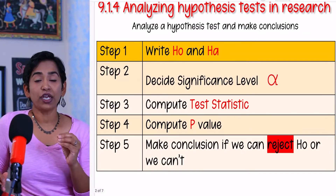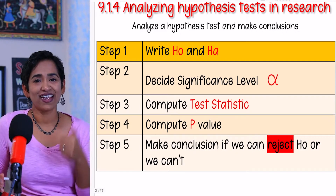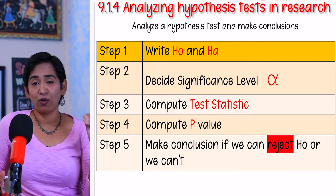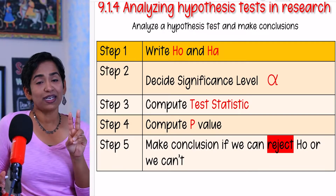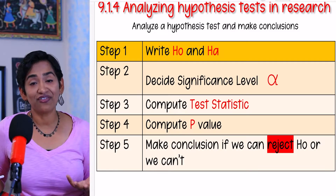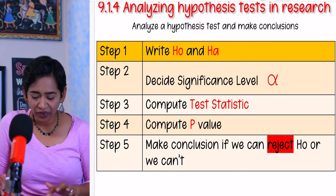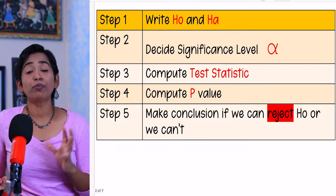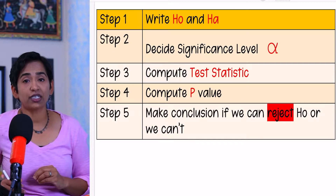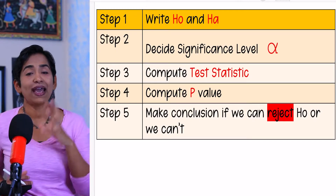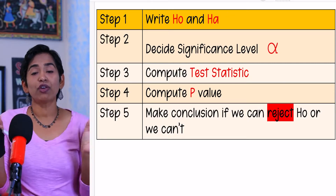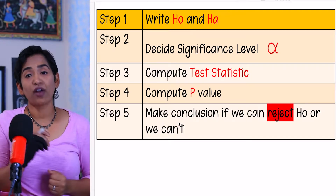Step one: write your H0 and HA — always start with those. Step two: find your significance level, which is your alpha value. Step three: compute the test statistic. In this particular section, your alpha and your test statistic are given to you. Using your sliders, you will be finding the p-value.